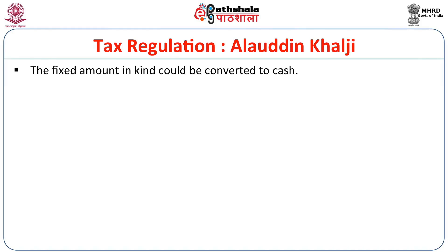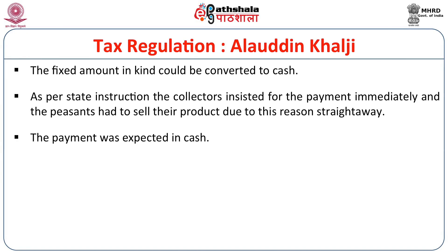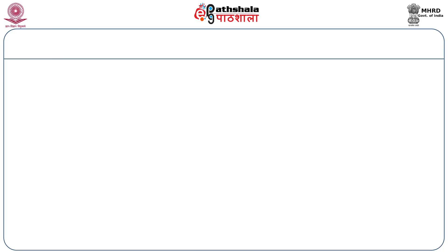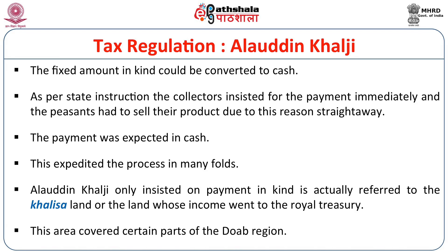The fixed amount in kind could be converted to cash. Collectors insisted on immediate payment, and peasants had to sell their produce straight away. The market therefore did not give high value to the peasants, and their subsistence amount was very low. Payment was expected in cash, which expedited the process in favor of the state and not the peasants. Alauddin Khalji insisted on payment in kind specifically for Khalisa land — land acquired by the state itself — which was located near the capital.